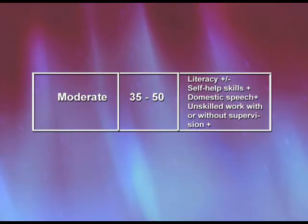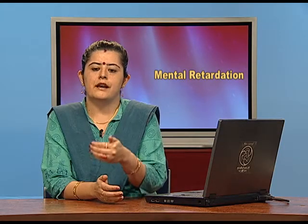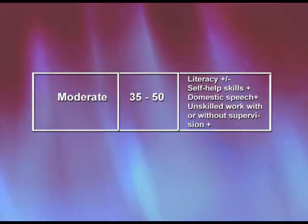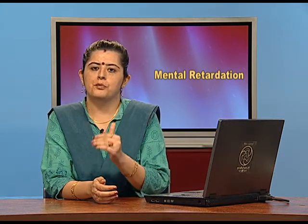Then we have the category of moderate mental retardation. In moderate, the IQ range is normally from 35 to 49. These people are normally able to study till first or second grade and are not able to go beyond that — we call them the trainable category. For self-help they are able to manage partially, but face some problems and require supervision and guidance, including for dressing up and eating.